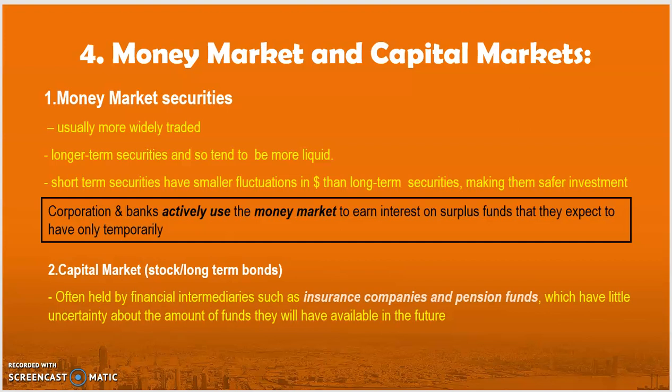The money market deals in short-term securities that are more widely traded, more liquid, and have smaller price fluctuations than long-term securities, making them safer investments. Corporations and banks actively use money markets to earn interest on surplus funds they expect to have only temporarily. The capital market deals in stocks and long-term bonds, often held by financial intermediaries such as insurance companies and pension funds, which have little uncertainty about the amounts of funds they will have available in the future.